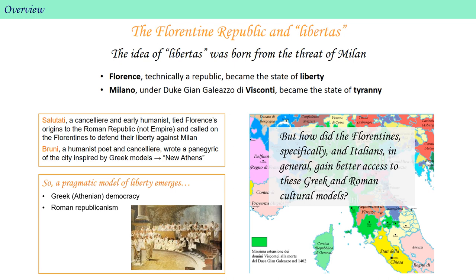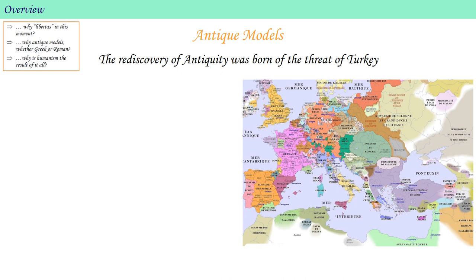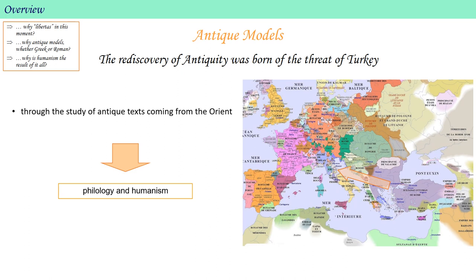But how did the Florentines specifically, and Italians in general, gain better access to Greek and Roman cultural models? The rediscovery of antiquity was largely born of the threat of the Ottoman Turks. As the Ottomans pushed into the west, the Greeks fled even further west to Italy and brought not only certain antique texts that had been lost in the west, but also, being native Greek speakers with academic familiarity with the ancient Greek language, they enabled interested Italian scholars to read the texts in their original versions rather than in translation.